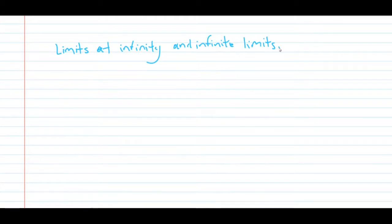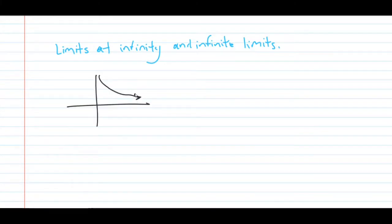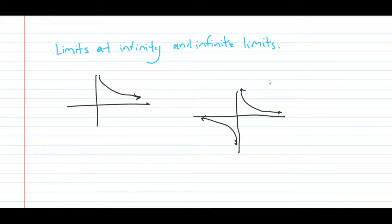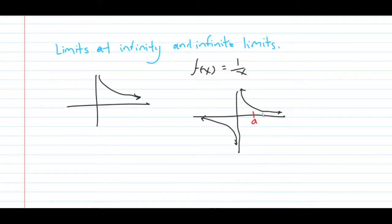In previous videos I mentioned that I used the function 1 over x to explain limits at infinity and infinite limits. For all the other videos I was just showing 1 over x in the first quadrant, but 1 over x is actually defined in both quadrants. If this point here is a limit of this function, as x approaches a, the limit would be the value here.